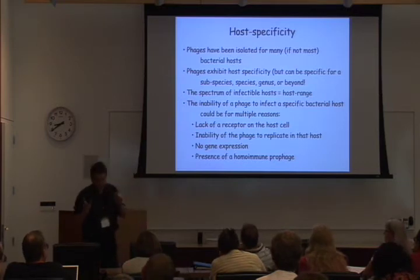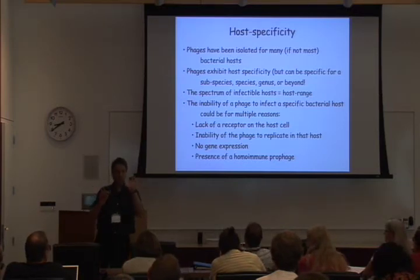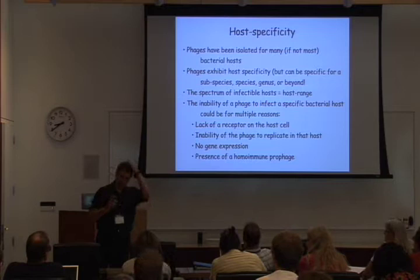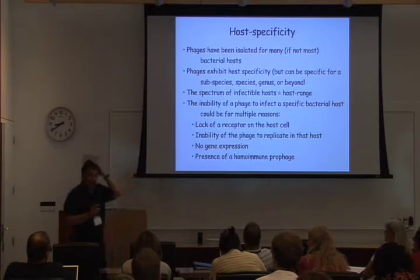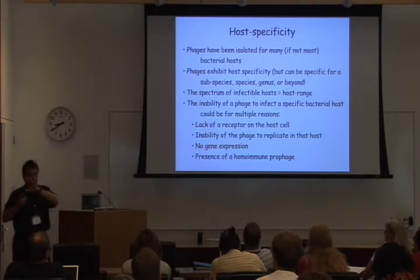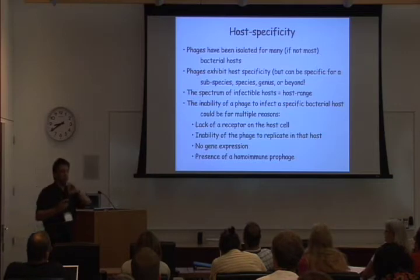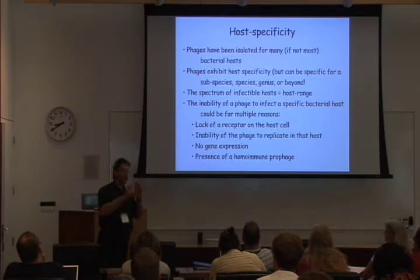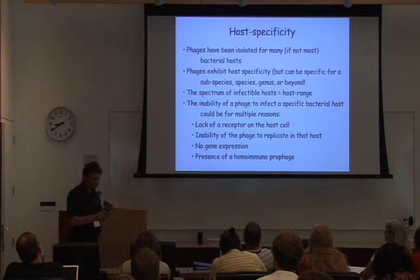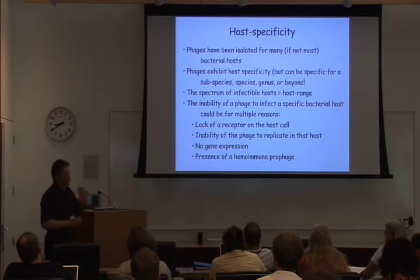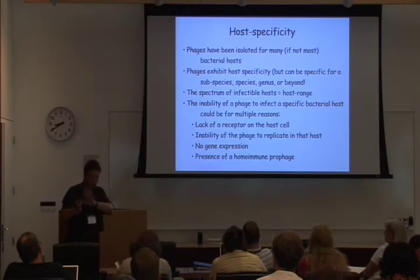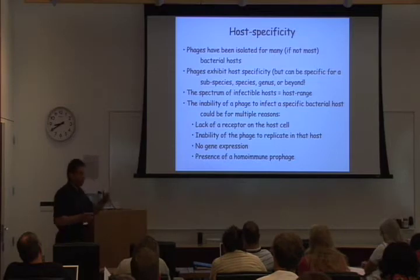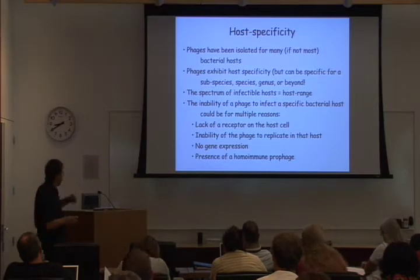Lysogens are immune to superinfection, so homoimmune phages will not form plaques sufficiently on a strain that carries a homoimmune prophage. But there are lots of other reasons why bacteriophages will fail to infect a particular bacterium, and I just wanted to briefly think about those.